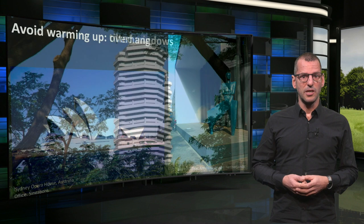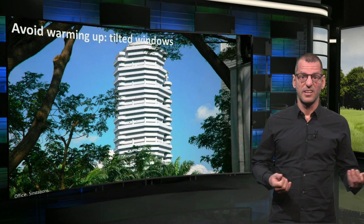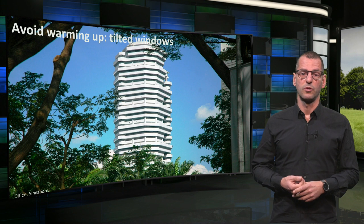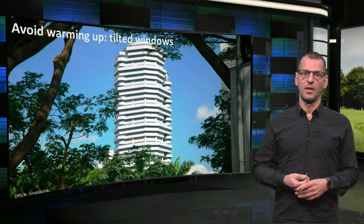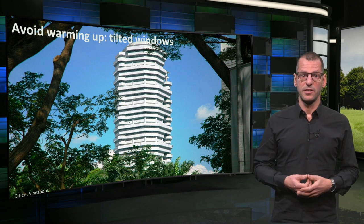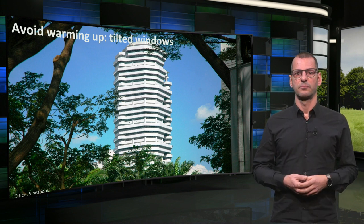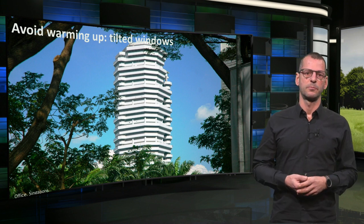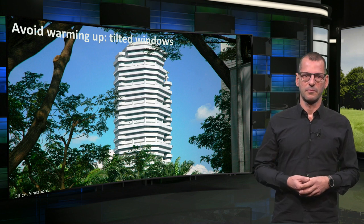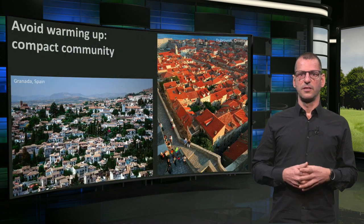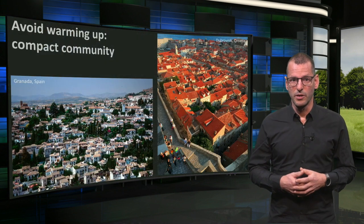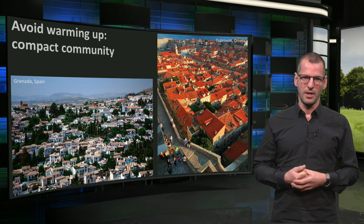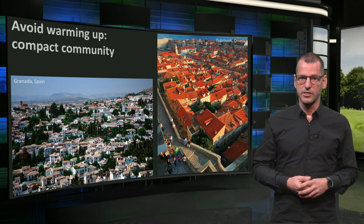Yet another solution can be seen here, again in Singapore, where this office tower was designed with windows tilting downwards. As a result, there is hardly any direct sunlight reaching the interior, and people can still look downward from their office desks. In hot and warm climates, the avoidance of unnecessary warming up of buildings is very important in the design of a building, especially with the prospect of climate change.